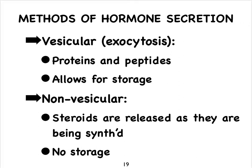If we first take a look at their methods of secretion, we see that some hormones are secreted by means of exocytosis, and that form of secretion we refer to as vesicular. Most protein and peptide-based hormones go through exocytosis, which allows for the storage of hormones in vesicles. Steroids, on the other hand, are mostly released as they're being synthesized, so they cannot easily be stored — we refer to this as non-vesicular secretion, meaning no vesicles are formed.